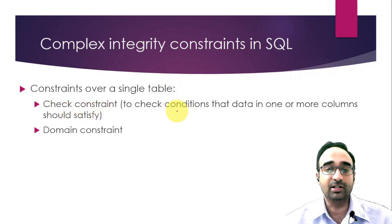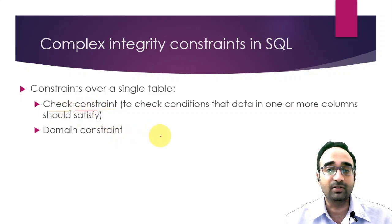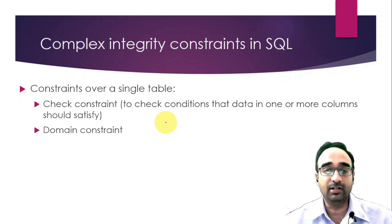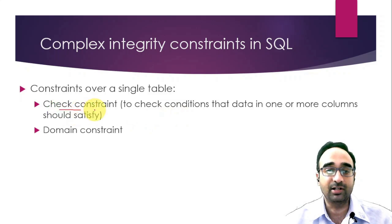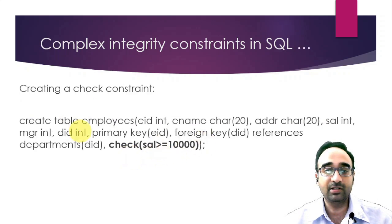The check constraint is used when you want to check for some conditions that the data should meet, either in one or more columns. For example, if you are giving ratings to products and your table has a rating column, the rating value should always be greater than one. In such a case you can enforce that using a check constraint.